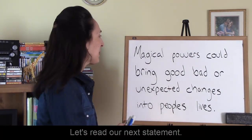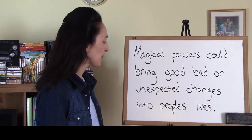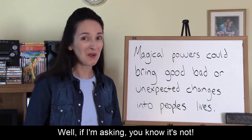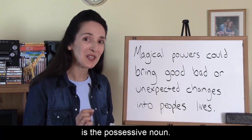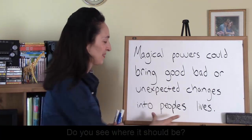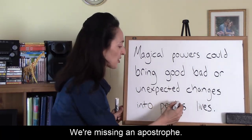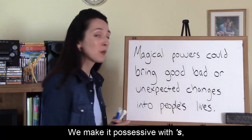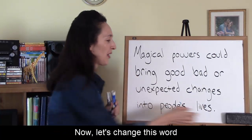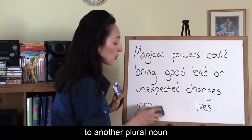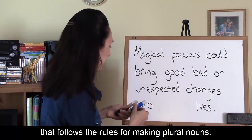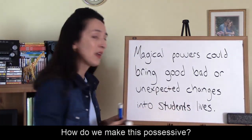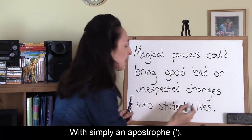Let's read our next statement: 'Magical powers could bring good, bad, or unexpected changes into people's lives.' Is this written correctly? The first thing to change is the possessive noun. We're missing an apostrophe — apostrophe S. People is an irregular plural noun; we make it possessive with apostrophe S even though there are many people. Now if we change 'people' to 'students,' how do we make it possessive? With simply an apostrophe — no S needed, because it's a regular plural noun.